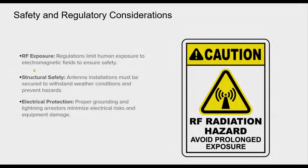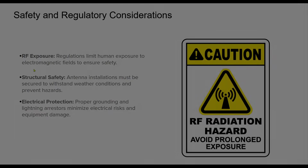Safety is an important aspect of antenna installation and operation. RF exposure regulations ensure that electromagnetic fields remain within safe limits to protect human health. Structural safety is also vital, as antennas must be securely installed to withstand wind, ice, and other environmental factors. Additionally, electrical protection measures like grounding and lightning arrestors help prevent damage to equipment and reduce the risk of electrical hazards. Following these guidelines ensures both regulatory compliance and operational safety.